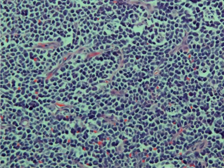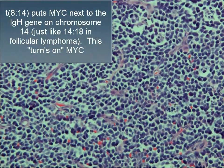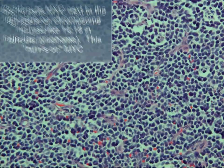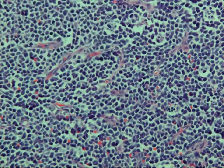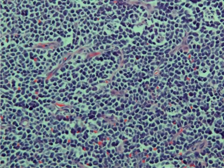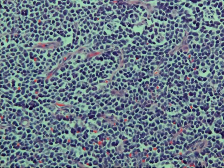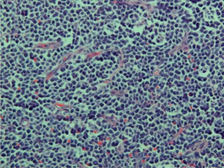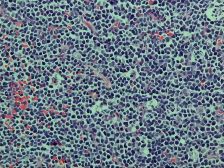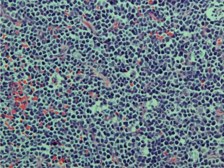Most of these tumors do have the t(8;14) MYC-IGH translocation, which is a very helpful molecular feature to use when trying to diagnose these. In summary, this is an example of a sporadic Burkitt lymphoma with a very nice starry sky pattern that you can see at low power.